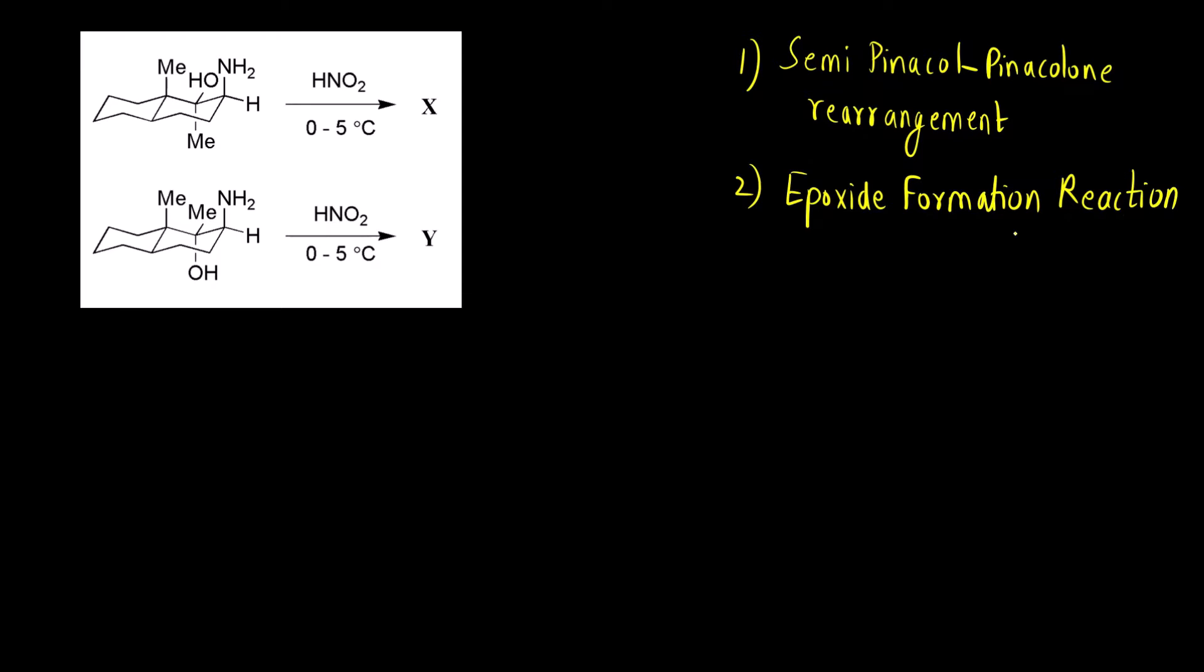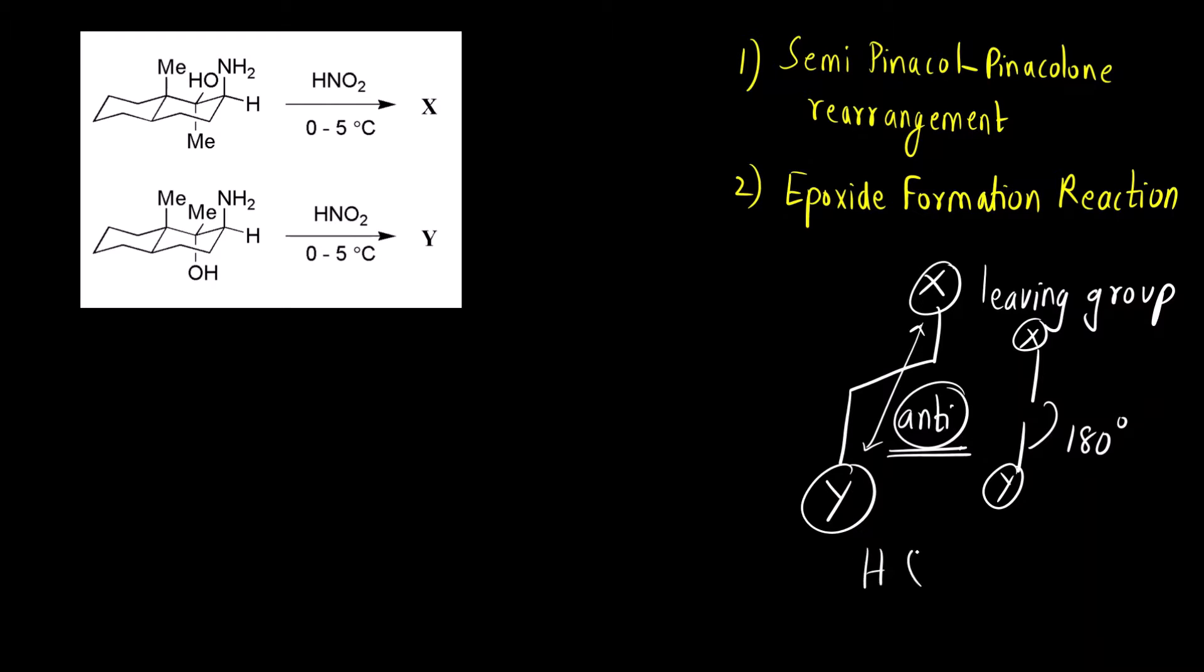Question is which reaction will dominate? That will depend on the stereochemistry. In general, suppose this is some leaving group X. The group that attacks the carbon having the leaving group is the one that is anti to this X. Anti means at an angle of 180 degrees. This X and Y they are both anti to each other. Stereochemistry wise they are anti to each other. Same is the stereochemistry we use for elimination reaction. We say anti-periplanar. Hydrogen and the leaving group must be anti-periplanar. Same anti is the stereochemistry that is required here.